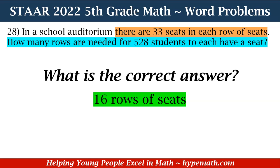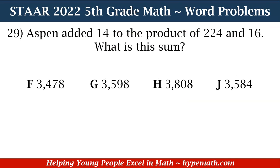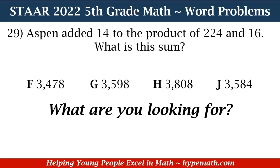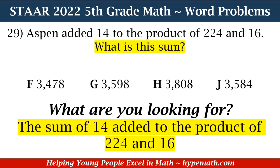Now let's look at question number 29. Aspen added 14 to the product of 224 and 16. What is the sum? Is it F, 3,478? G, 3,598? H, 3,808? Or J, 3,584? In order to solve this problem, the first thing we need to ask ourselves is: what are we looking for? We are looking for the sum of 14 added to the product of 224 and 16.